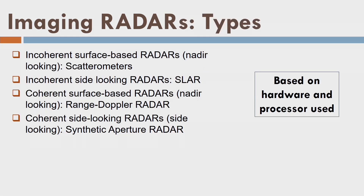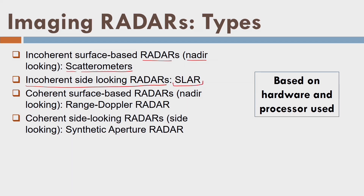Imaging radar has four types: incoherent surface-based radar (nadir-looking, example: scatterometers); incoherent side-looking radars (called side-looking airborne radar — though side-looking airborne radar can also treat coherent signals); coherent surface-based radars (nadir-looking, example: range Doppler radar); and coherent side-looking radars (called side-looking and also called synthetic aperture radar). In this module, we are going to discuss only the coherent type.